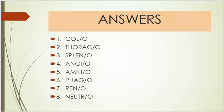Answers: Number one is colo, number two is thurasso, number three is splenno, number four is angio, number five is amnio, number six is phago, number seven is reno, number eight is neutrophil. Thank you.